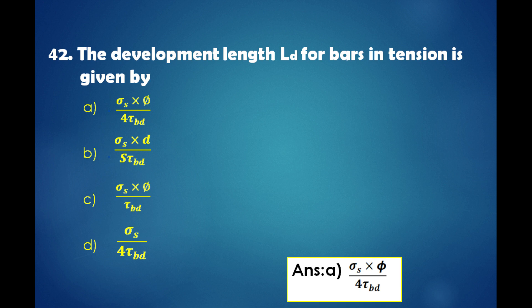The development length LD for bars in tension is given by: a) σs × φ / (4τbd), b) σs × d / (sτbd), c) σs × φ / τbd, d) σs / (4τbd). (Answer not provided in this segment.)